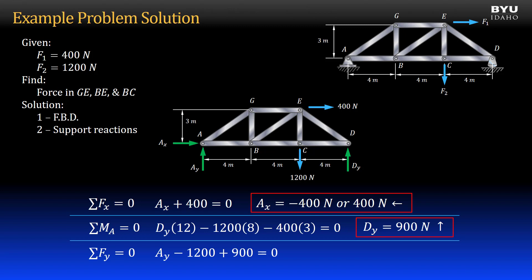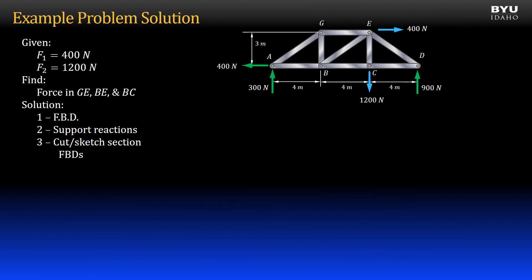And summing forces in the y direction to zero, we get that reaction Ay is 300 newtons, pointing upward. I revise my free body diagram with the correct support reactions.